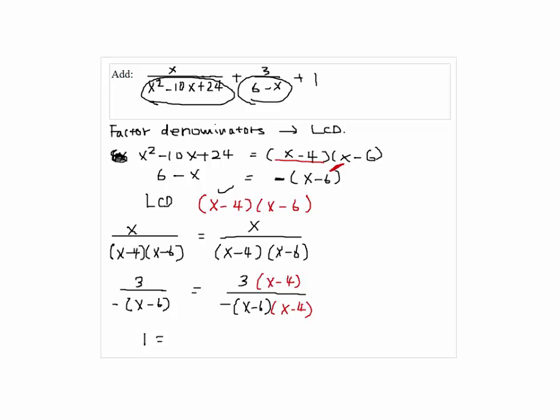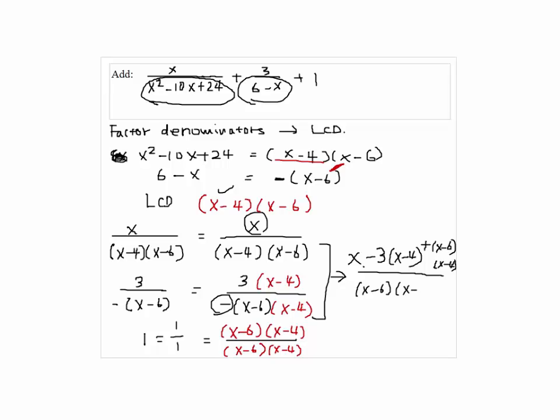The last fraction, which is 1, we think that as 1 over 1, so since we want the x minus 6 times x minus 4, we're multiplying the same factors on top as well. So we have x minus 3 times x minus 4 plus x minus 6 times x minus 4 over x minus 6 times x minus 4.